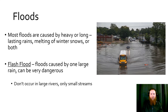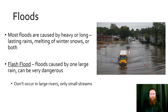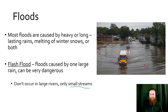Floods are usually caused by heavy or long-lasting rain, or by snowmelt — sometimes rain that melts snow. Flash floods are caused by one large rain event and can be very dangerous, destroying property and carrying away cars. We usually don't see them in large rivers, only in smaller streams, because large rivers have natural levees and floodplain areas. Smaller streams don't have these, so they can experience these rapidly flowing downhill flash floods.